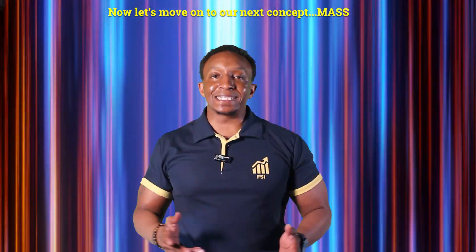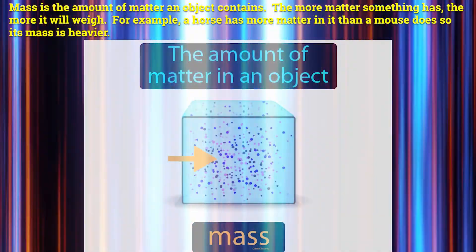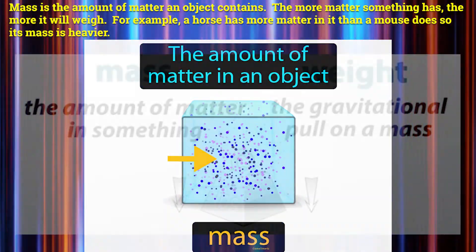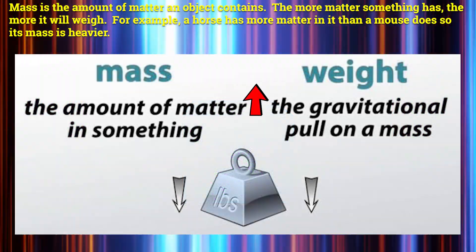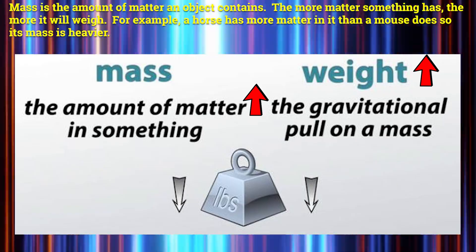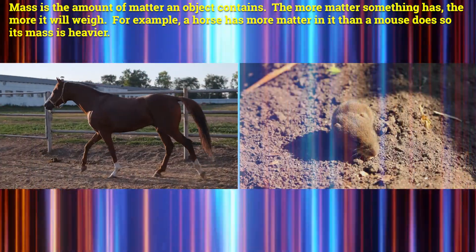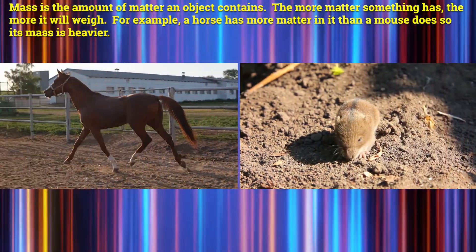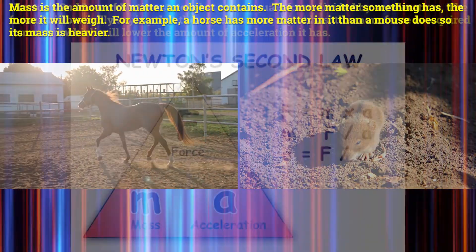Now let's move on to our next concept: mass. Mass is the amount of matter an object contains. The more matter something has, the more it will weigh. For example, a horse has more matter in it than a mouse does, so its mass is heavier.